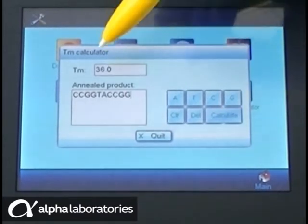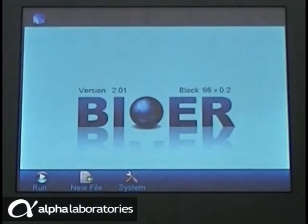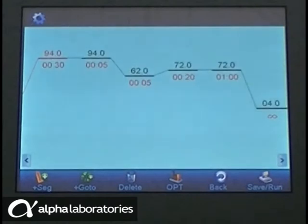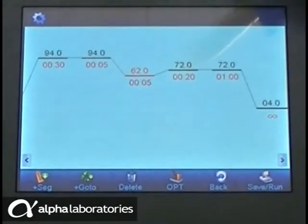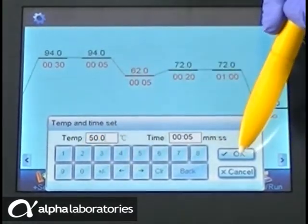Creating a new file is simple. Starting from the pre-programmed standard file, the LifeEco makes it very easy to create your own protocol. Just touch any segment you wish to change and touch again to modify the temperature and time as required.